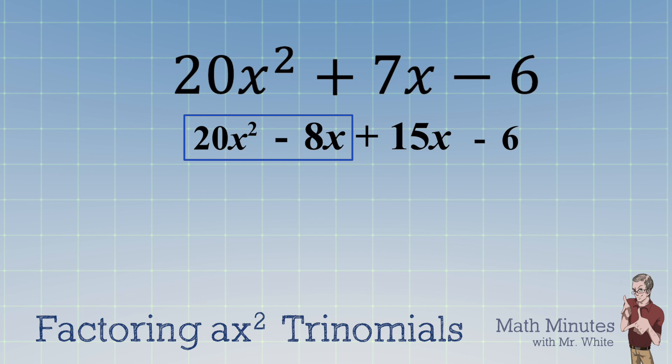So let's bring down the other terms and then begin the grouping method. The first two terms have a GCF of 4x, leaving behind 5x and negative 2 inside the parenthesis. Always check your work by doing that distributive property real quickly, and just make sure that you did your factoring right. Looking at the second group, the GCF is positive 3, leaving behind 5x minus 2.